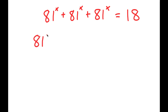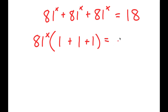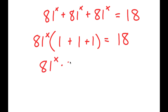So I factor out 81 to the power of x. I get 81 to the power of x times — 81 to the power of x divided by 81 to the power of x is simply 1. So I get 81 to the power of x times 1 plus 1 plus 1 is equal to 18. Now, 1 plus 1 plus 1 is equal to 3, so I get 81 to the power of x times 3 is equal to 18.